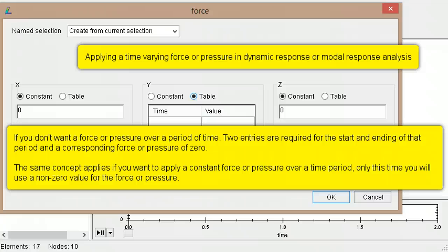This implies that if you want to have no load over a time period, then the starting and ending loads over that time period must both be zero.